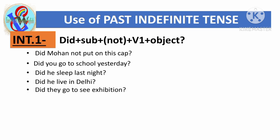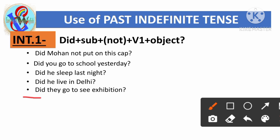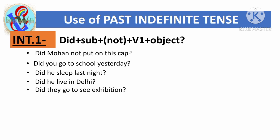'Did they go to see the exhibition?' Here 'did' is used first, the subject is 'they', the first form of the verb is 'go', and the purpose is 'to see the exhibition'.